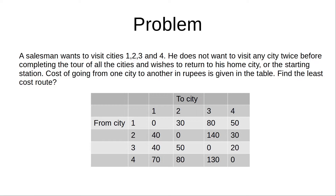In this table, traveling from city 1 to city 1, the cost is kept as 0; similarly, traveling from city 2 to city 2 the cost is 0. Before solving, you will have to convert these diagonal zeros to infinity, because it is logical that the cost of traveling from a city to itself is 0, but we need infinity to exclude it. For example, traveling from city 2 to city 3 the cost is 140 rupees, and from city 4 to city 2 the cost is 80 rupees.